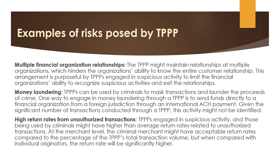It is important to understand that credit card transactions, whether conducted through a TPP or other financial organization, do not need to be significant in amount to be considered suspicious. For example, there might be a high number of small-dollar transactions, repeat customers with no discernible pattern, or customers who receive international donations that do not match their declared business. Therefore, strong CDD, EDD, and transaction monitoring controls are essential to detect suspicious activity.